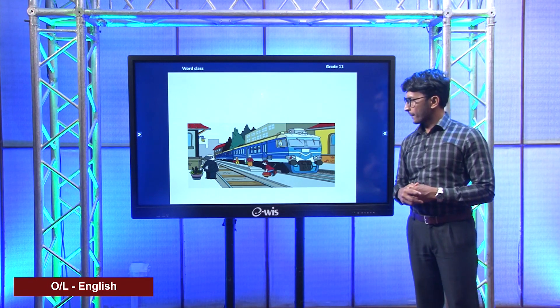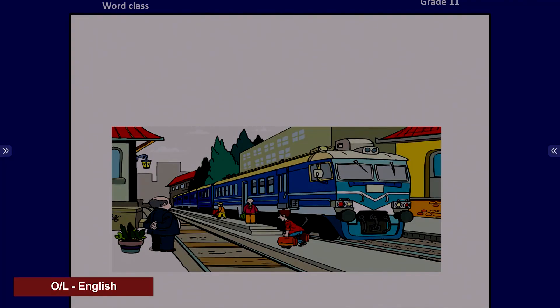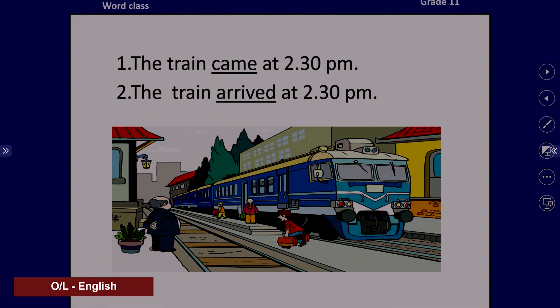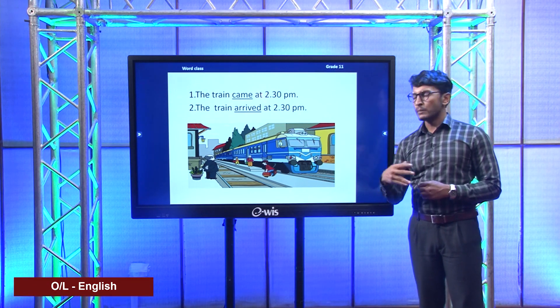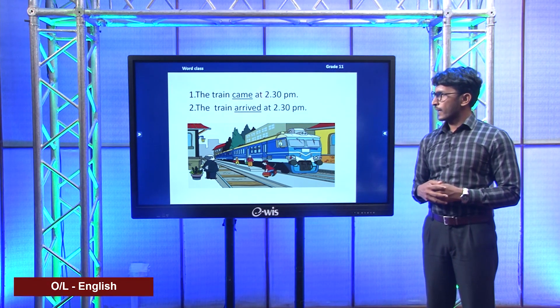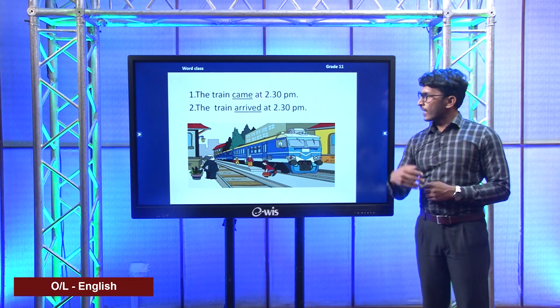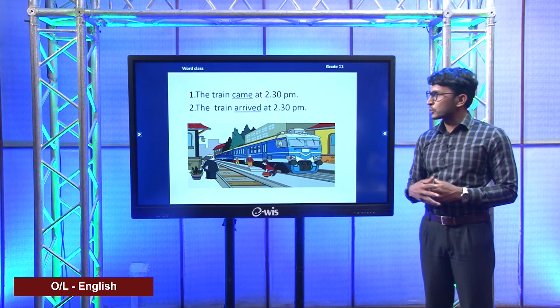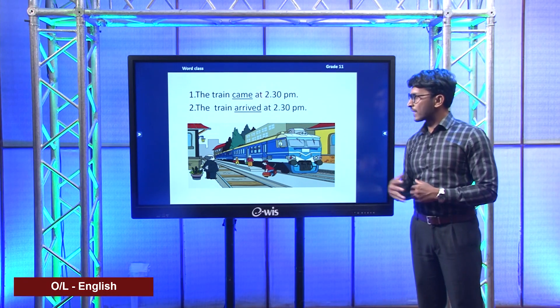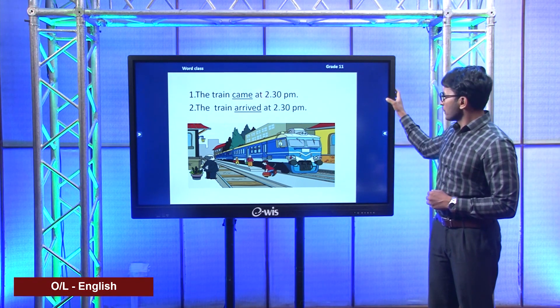Let's have a look at this picture. There's a train stopped at the station and the passengers who were on board are leaving now. Let's see the sentences: The train came at 2:30 p.m. The train arrived at 2:30 p.m. The most appropriate one is the second — the train arrived at 2:30 p.m. Come means a movement in a particular direction, while arrive means finishing that journey — you come to a destination. In this picture, the train has come to the destination and the passengers are leaving.